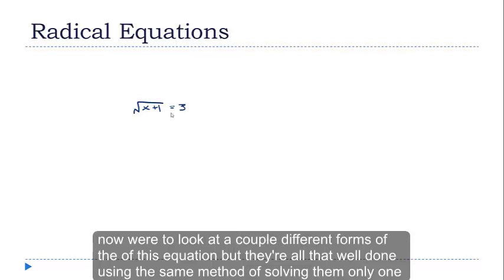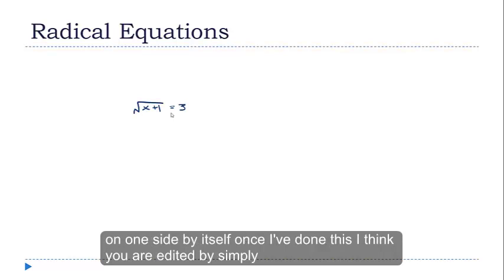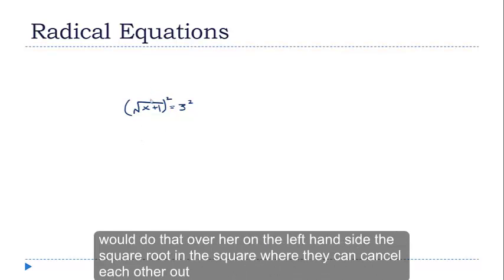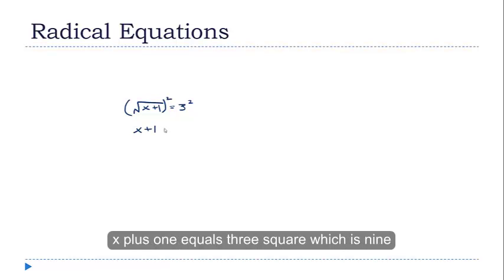We're going to look at a couple of different forms of this equation, but they're all going to boil down to using this same method of solving them. What we want to do is get the radical part — that's the part with the root — on one side by itself. Because once I've done this, I can get rid of it by simply squaring both sides. When I do that, the square root and the square part cancel each other out, and we're left with just x plus 1 equals 3 squared, which is 9.